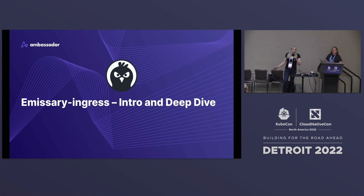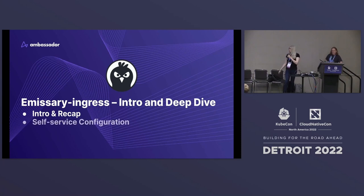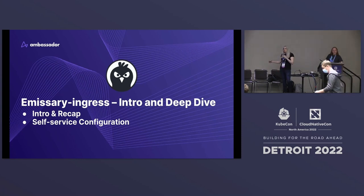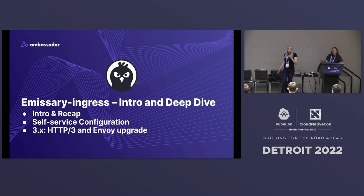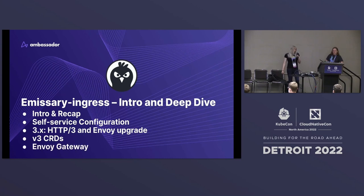So just to get started, I'm going to set the agenda. We're basically just going to go over some intro about Emissary Ingress, some recap about what we have worked on, get into a bit about how you configure Emissary Ingress, what are the benefits about why we chose the way we did to configure it, talk about the 3.x major version we released since the last KubeCon, talk a bit about the path to the next version of CRDs, and then lastly mention a bit about Envoy Gateway, what's been going on with that, and what our plans for the future are.